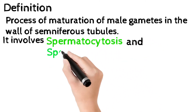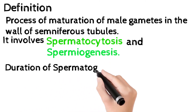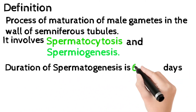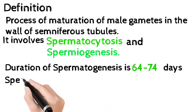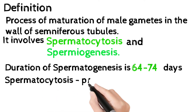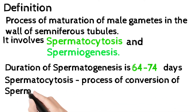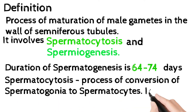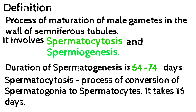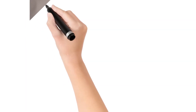Spermatogenesis involves spermatocytosis and spermiogenesis. The duration is 64 to 74 days. Spermatocytosis is the process of conversion of spermatogonia to spermatocytes, and it takes 16 days.